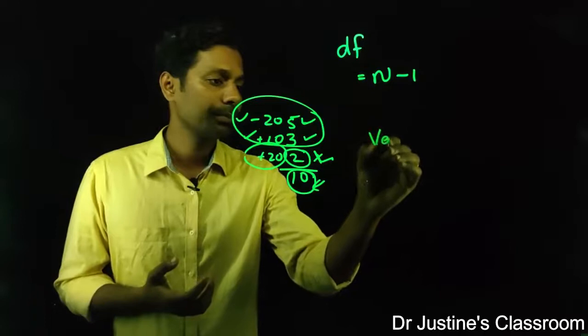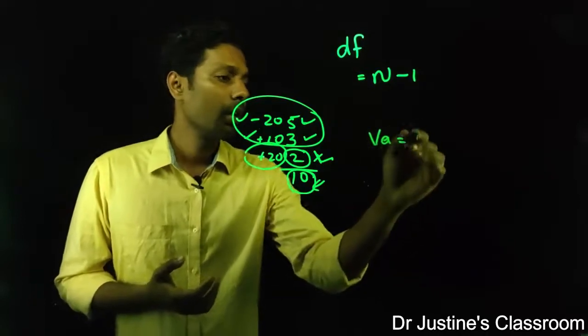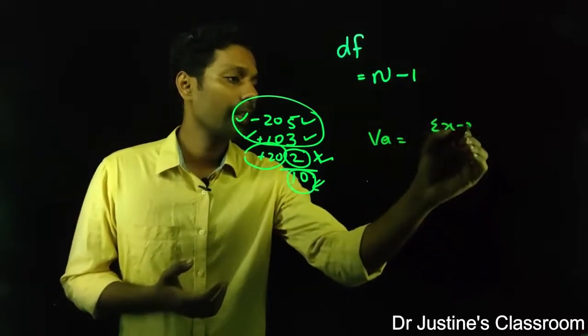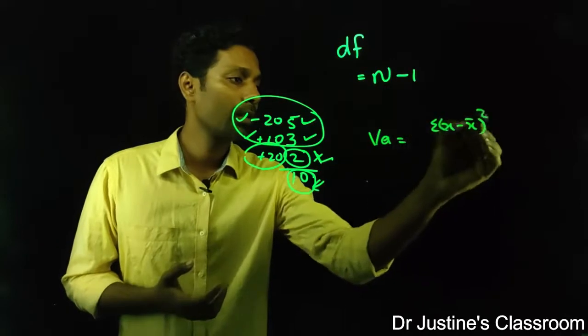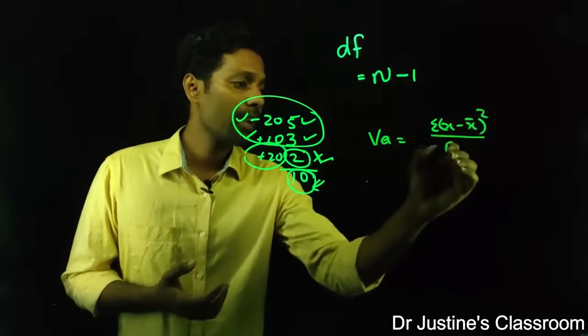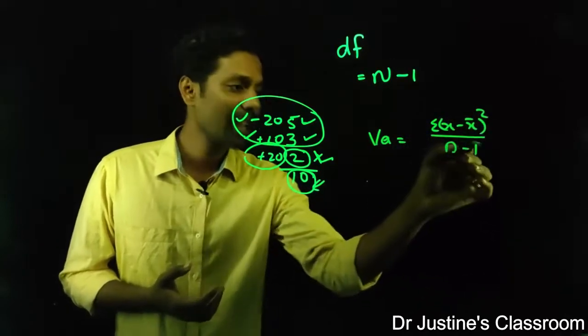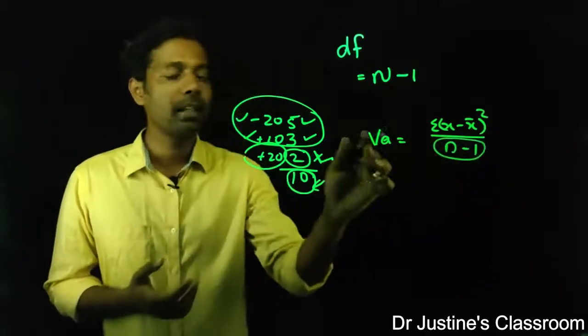Better say the equation of variance is: variance equals sigma (X minus X bar) whole square divided by n minus 1.